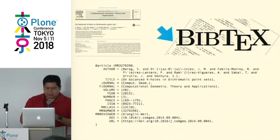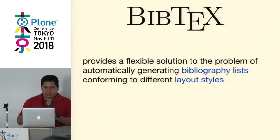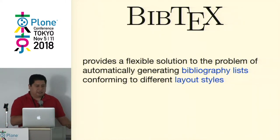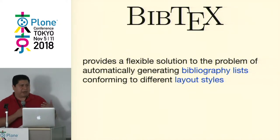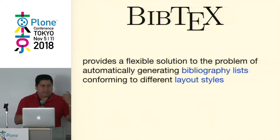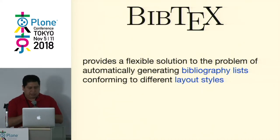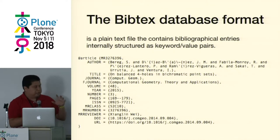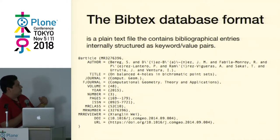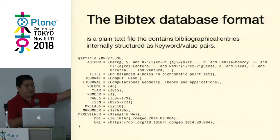This leads to a reference to the publication in a format called BibTeX. BibTeX is basically a managed bibliographic reference system — it provides flexible solutions to the problem of automatically generating bibliography lists in different styles for journals. This language was developed in 1985, before the web was widely used, and it was mainly for printed journals.